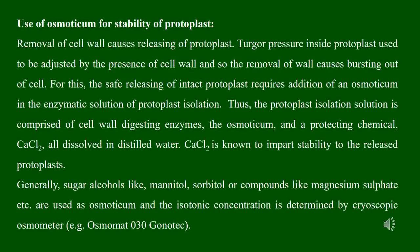During the process of removing the cell wall, as soon as it is removed, the turgor pressure from inside the cell may cause the cell to burst. To obtain intact protoplasts, addition of an osmoticum to the enzymatic solution is necessary. The protoplast isolation solution is therefore composed of enzymes, osmoticum, calcium chloride, and distilled water.